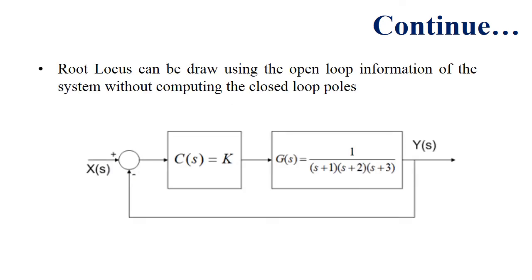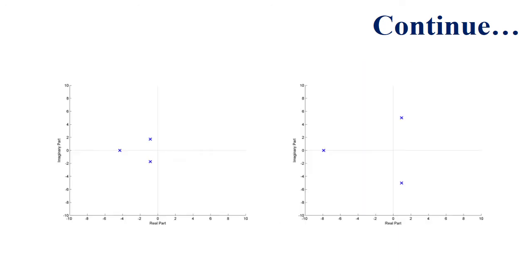Root locus can be drawn using the open-loop information of the system without computing the closed-loop poles. Suppose we have a system in which K is the unknown variable — we can check how K affects the stability and transient response of the system. Here we have the pole-zero plot for K equals to 10 on the left and K equals to 200 on the right. By changing the gain value, our system moves towards instability. Evaluating the gain K is very important for analyzing the stability and transient response of the system.